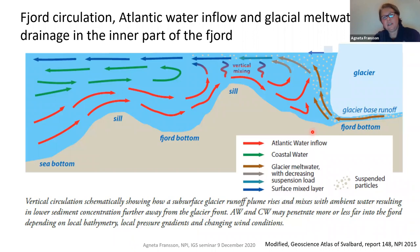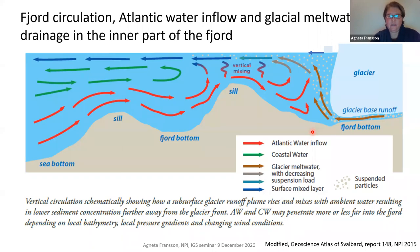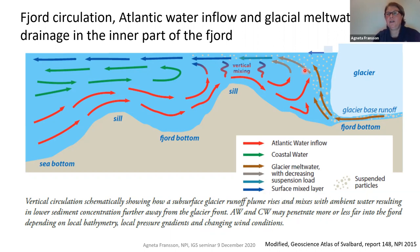Looking at fjord circulation and water masses, these fjords typically have three layers: a surface layer, intermediate layer, and bottom layer. The red arrow at the bottom shows Atlantic water inflow — warm, salty water entering the fjord across the sill — which melts the base of the glacier. This fresh water mixes with the salty water, becomes lighter, rises to the surface, and carries suspended particles upward. You also have meltwater from the glacier surface, and this mixed water flows out of the fjord. Circulation also depends on wind and pressure gradients.